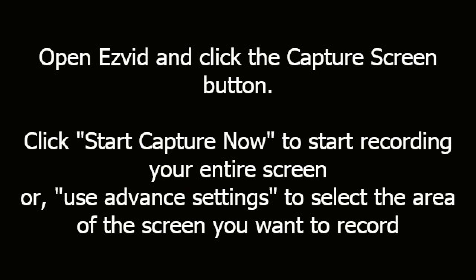Open EasyVid and click the Capture Screen button. Click Start Capture Now to start recording your entire screen, or use advanced settings to select the specific area of the screen you want to record.